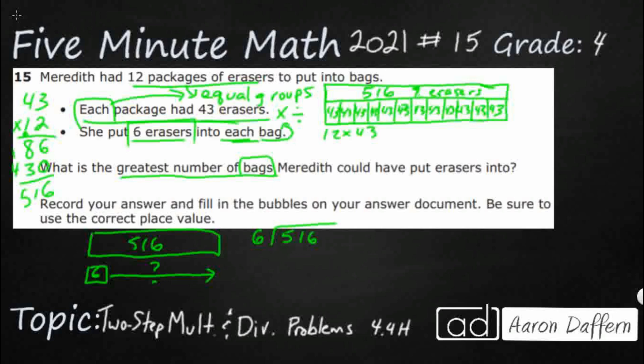So six goes into five. It doesn't. Six goes into 51. Eight times. We have to know our sixes here. Eight times six is 48. We're just going to ignore this other six, pretend like it's not there. We're dealing with the 51. 51 minus 48. That's three. Check. Is that three smaller than the six? Yes, we're good to go. Let's bring this six down.